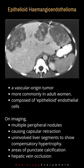On imaging, this tumor presents as multiple peripheral nodules that often coalesce, causing capsular retraction. Uninvolved liver segments show compensatory hypertrophy. It contains areas of punctate calcification occasionally, and can present with hepatic vein occlusion.